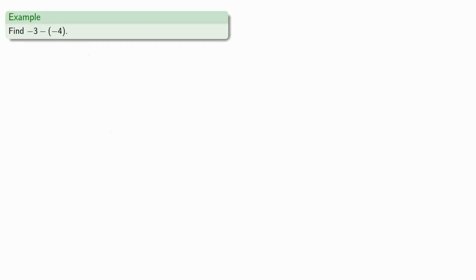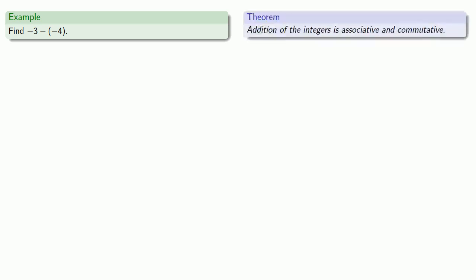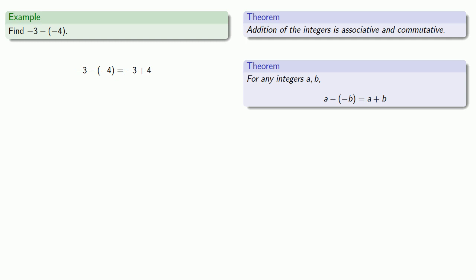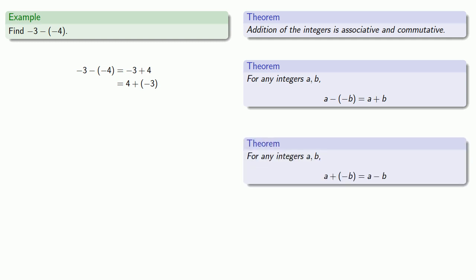So let's take the additive inverse of 3 minus the additive inverse of 4. Because one of our main theorems is that addition of integers is associative and commutative, it's easier to think about everything in terms of addition. Our theorem says a minus the additive inverse of b is the same as a plus b, so we can rewrite this as additive inverse of 3 plus 4. Because addition is commutative, we rearrange this as 4 plus additive inverse of 3. We also have a theorem that a plus additive inverse of b is the same as a minus b, so this is 4 minus 3.